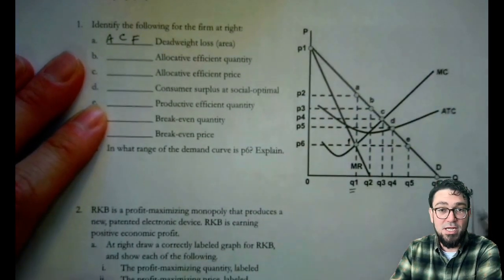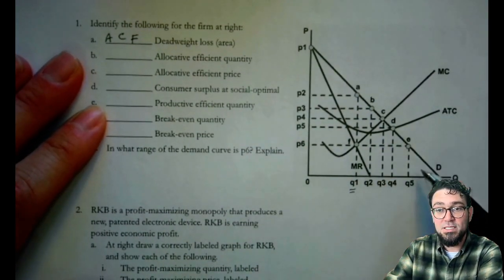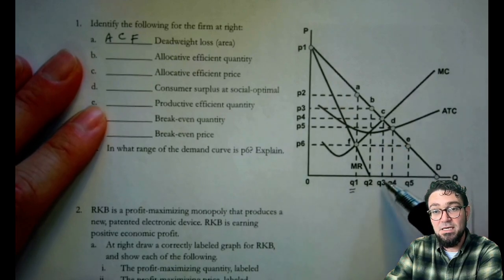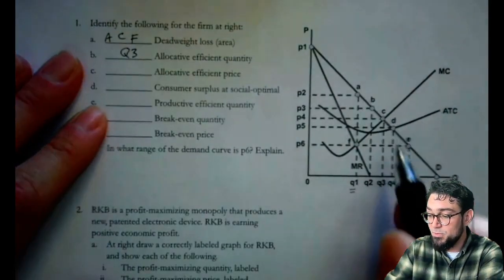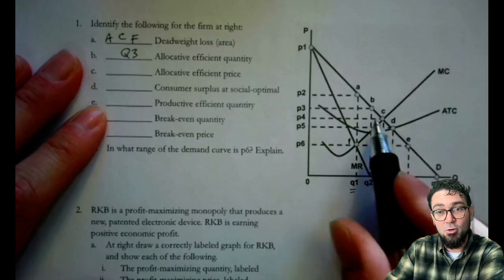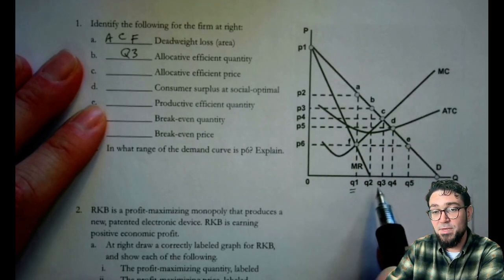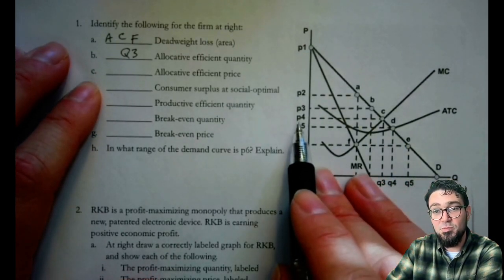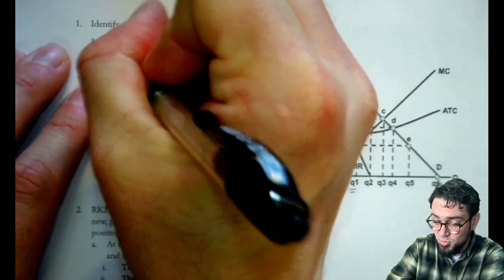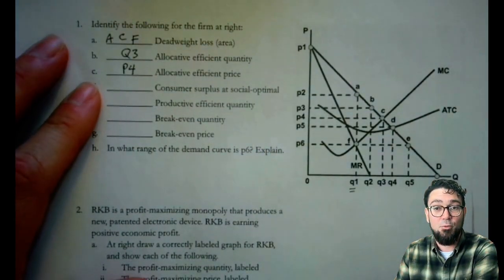Allocative efficient quantity or socially optimal is going to be where marginal cost equals demand, and that's going to be point C. The quantity that corresponds to that is Q3. So I would not want to use just C for that. That's not a quantity, that's a point. So I'd want to come down to that quantity. Allocative efficient price, I come from point C over to P4.